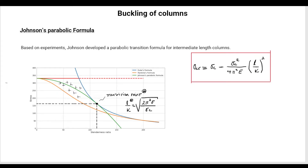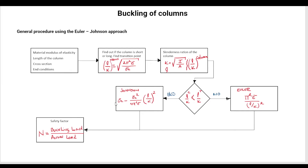In the end you have a combined curve — a combination of what happens before the transition point and what happens after. The procedure to calculate the maximum permissible load on a column starts with the material modulus of elasticity E, the length of the column, the cross-section, and end conditions — whether they are pinned, fixed, fixed-free, or other combinations. Then you find the transition point where Johnson's formula becomes tangent to Euler's curve.